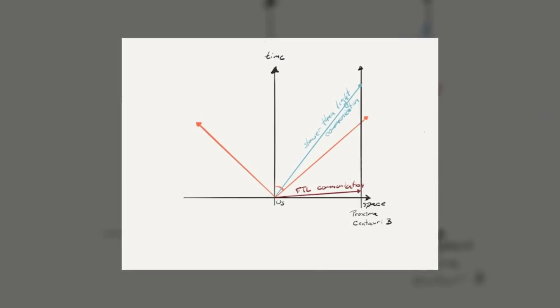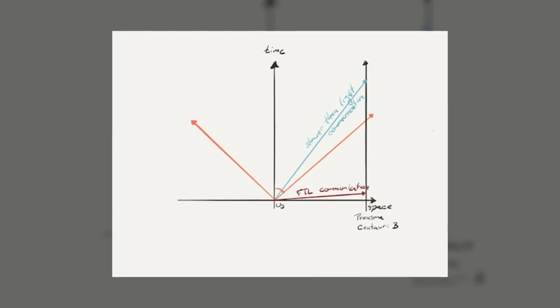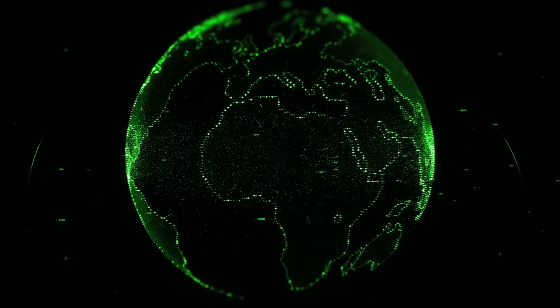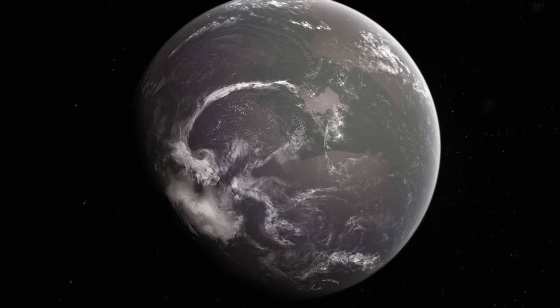This is because Proxima Centauri is moving at essentially the same velocity as Earth. The differences are small compared to the speed of light, thus there are no big relativistic effects between our counting of time and the Proxima Centaurians.